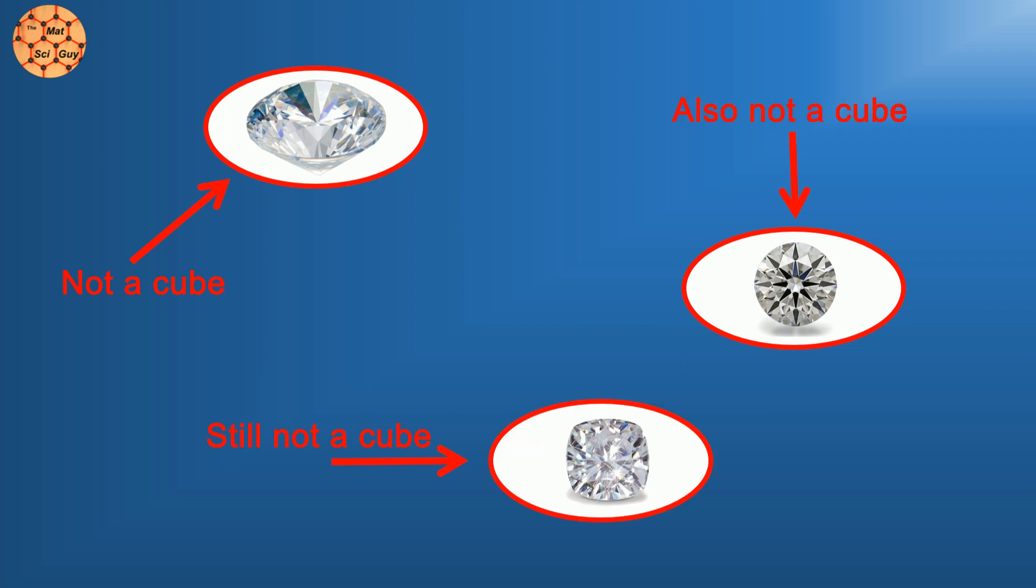The cubic term actually refers to the arrangement of atoms, which plays a big role in giving zirconia its diamond-like properties.